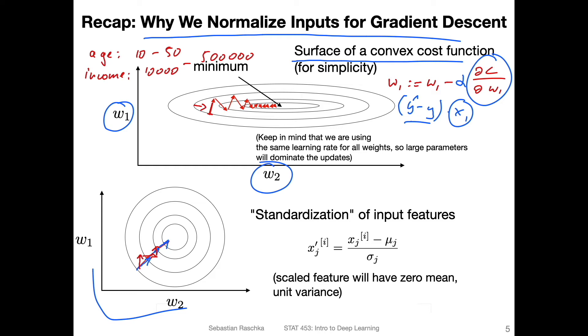And then if we have input features on very different scales, then finding a good learning rate would be hard. We would have to choose a learning rate for each weight individually, and that would be a lot of hassle.